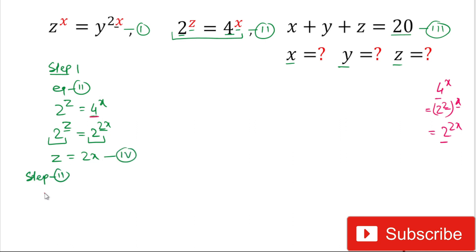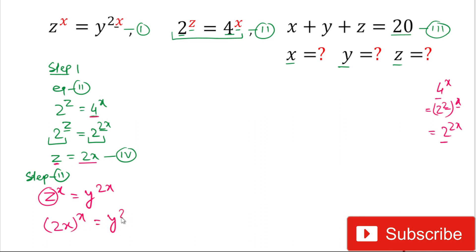Now we write equation 1: z power by x equals y power by 2x. In this equation we substitute the value of z, which is 2x. So in place of z we write 2x, giving us (2x)^x equals y^(2x). To make the powers the same, we write y^(2x) as (y²)^x.